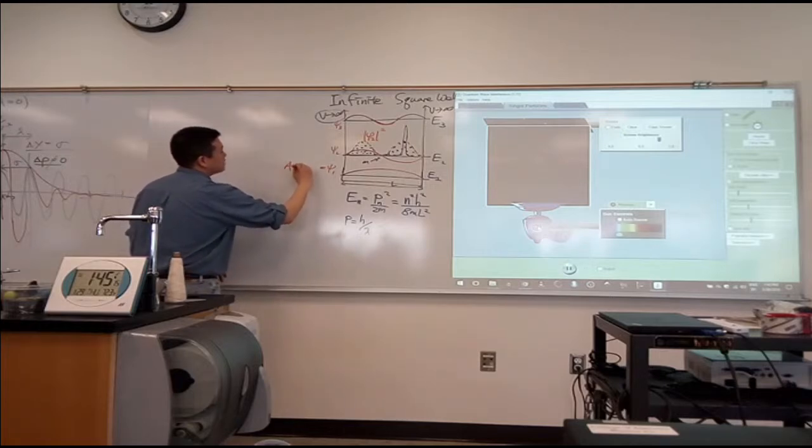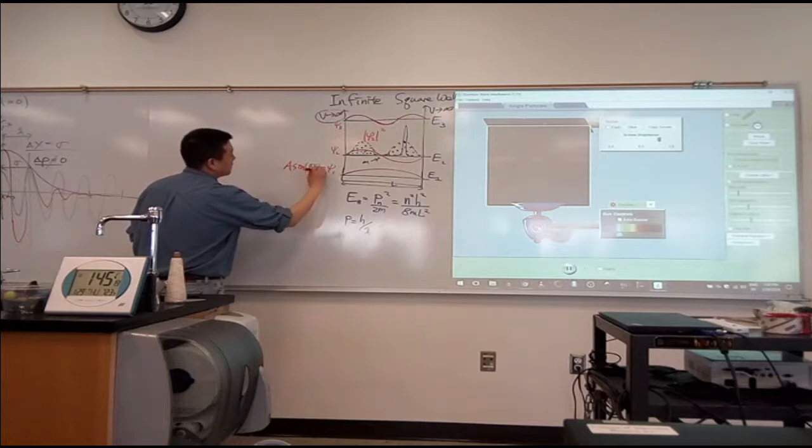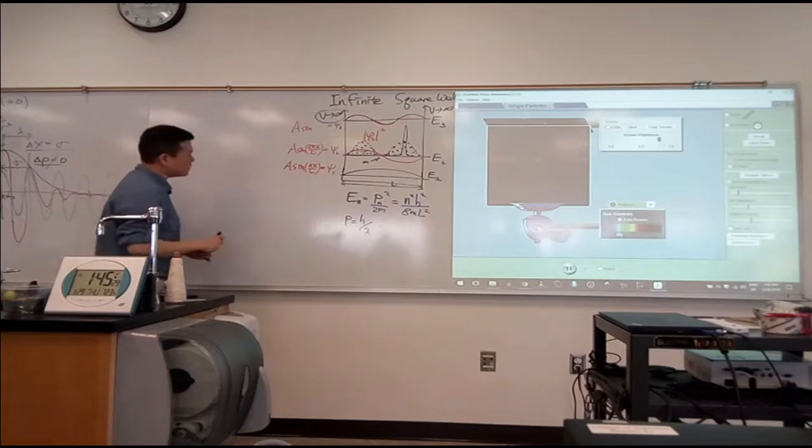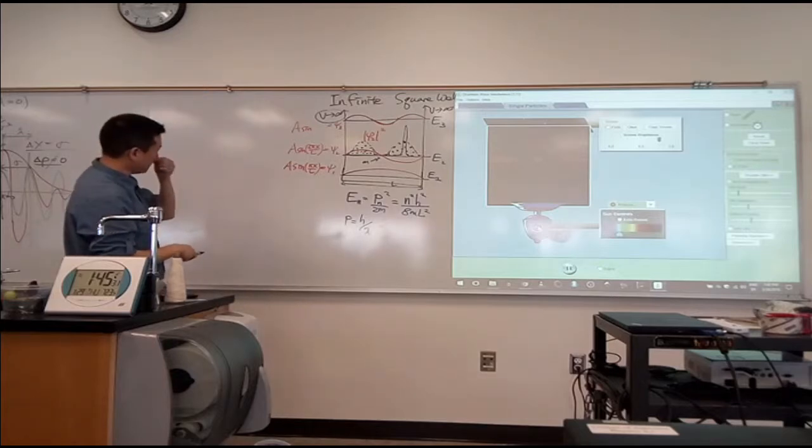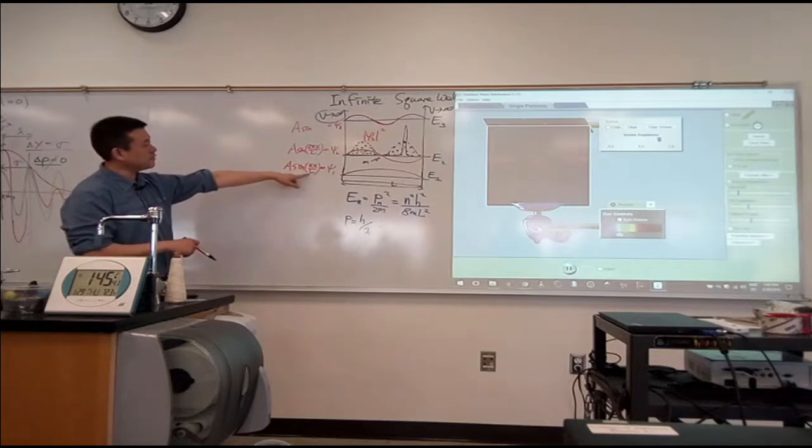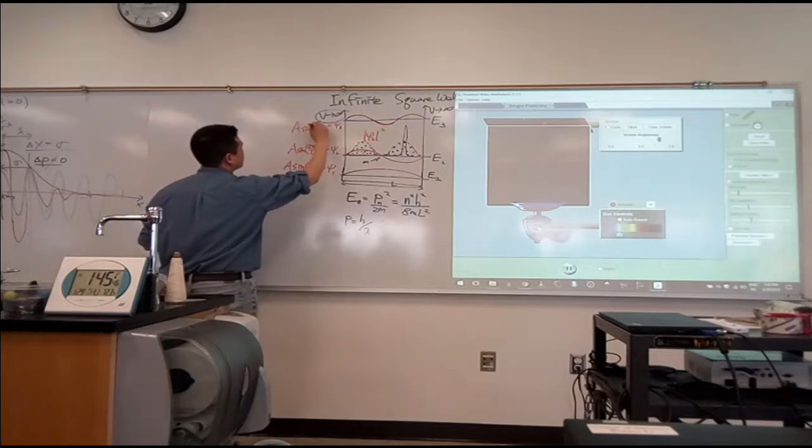These are a sine of pi x over L, a sine of two pi x over L, and this is a sine of, am I doing this right? I feel like I'm missing something. When x is equal to L, this is pi. When x is equal to L, this is two pi. Okay, I think I'm fine. Sine of three pi x over L, and so on.